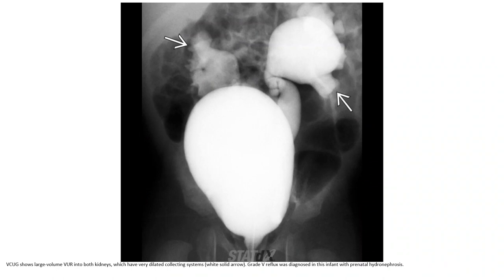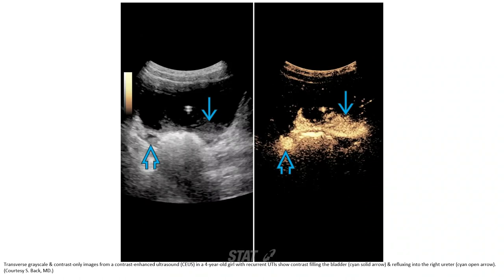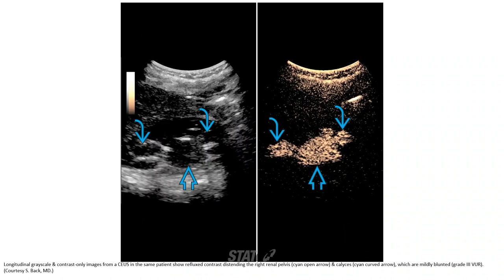VCUG shows large volume VUR into the left kidney, which has a very dilated collecting system, consistent with grade 5 VUR plus hydroureter. Transverse grayscale and contrast-only images from a contrast-enhanced ultrasound in a 4-year-old with recurrent UTI show contrast filling of the bladder and refluxing into the right ureter.